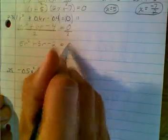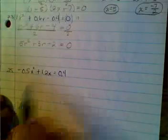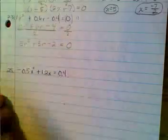So now I have 5r squared plus 3r minus 2. Notice that when you divide by 2, every term gets divided by 2. And 0 divided by 2 is 0.